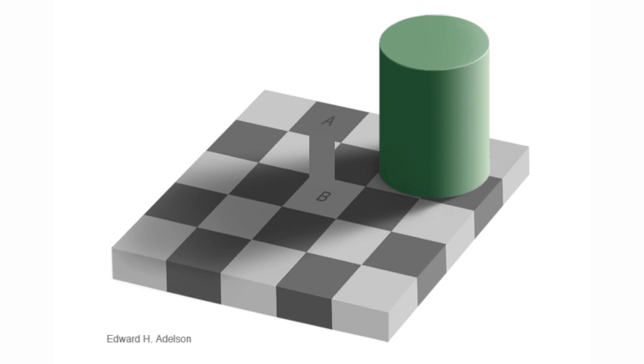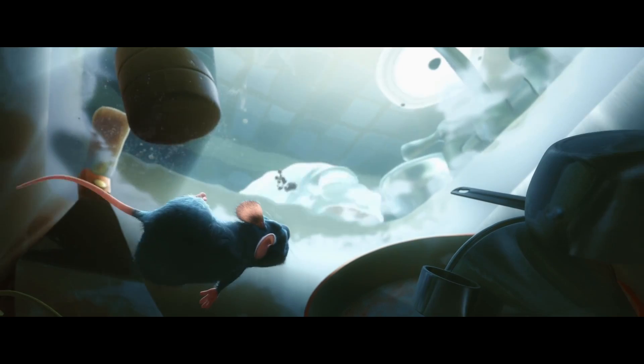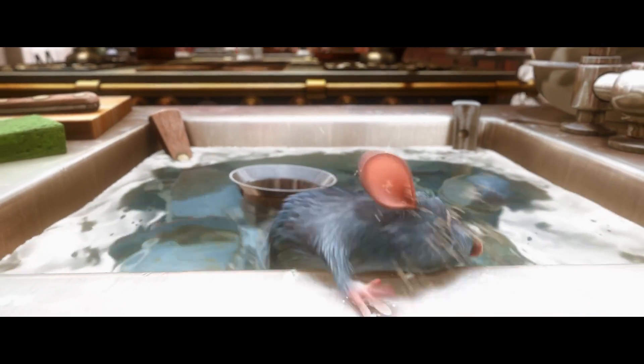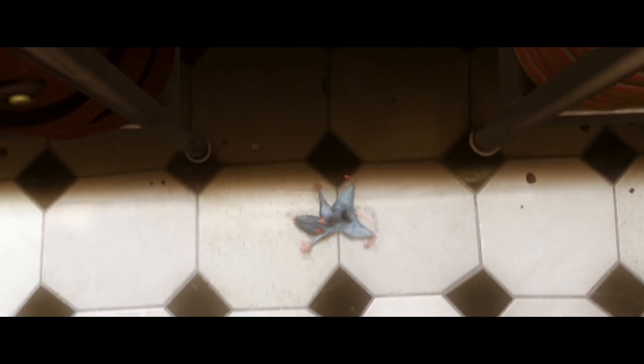So clearly, not everything is what it seems. How we perceive contrast or brightness depends very much on the surrounding image. And it brings us back to how the brain processes incoming image signals. The structure of our visual system is optimized so that we can do important things, like survive.